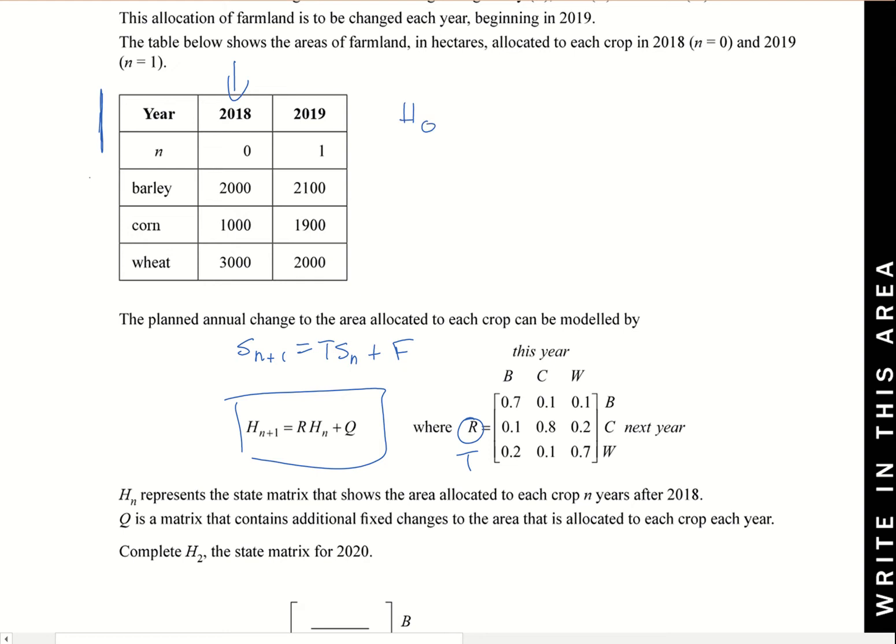For 2018, that's essentially h0, so h0 is equal to 2000, 1000, 3000. h1 is equal to 2100, 1900, and 2000. So we've got to keep those in mind as we go through this.